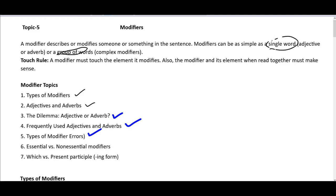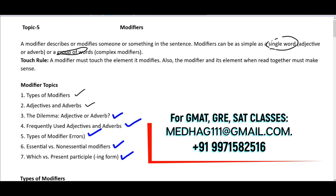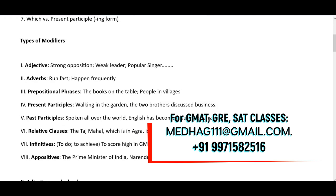There are eight types of modifiers. These are: adjectives, adverbs, prepositional phrases, present participial phrases, past participial phrases, relative clauses, infinitives, and appositives. These are the types of modifiers you come across in GMAT.